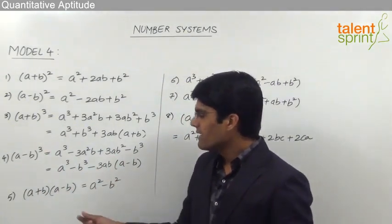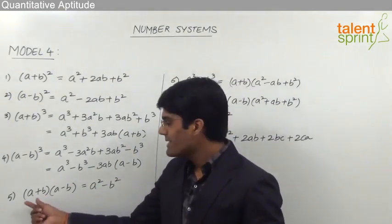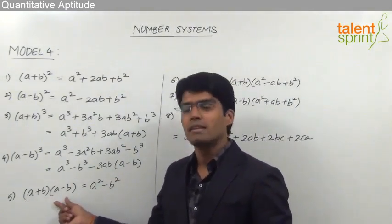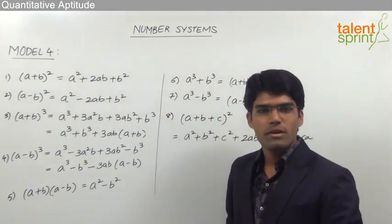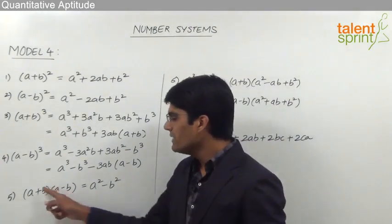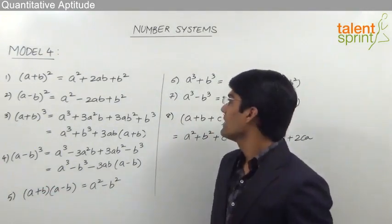The fifth formula is a very important concept: (a + b)(a - b) should always be taken as a² - b². When we multiply these two, what we get is a² - b².